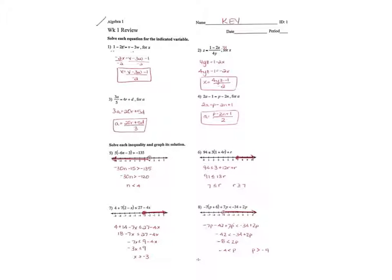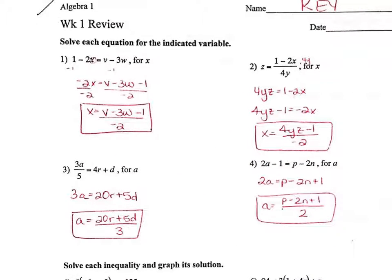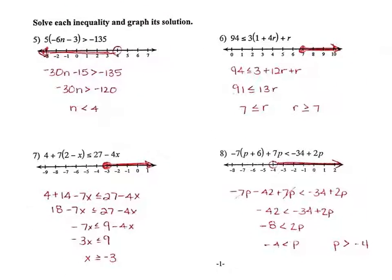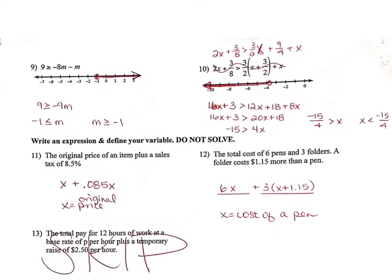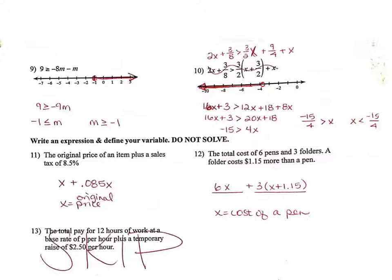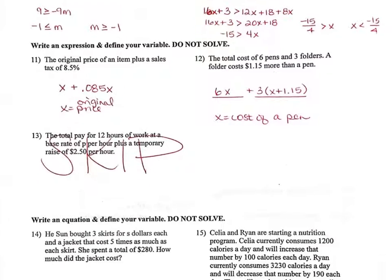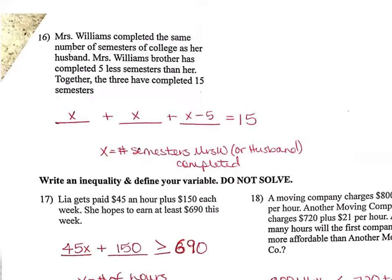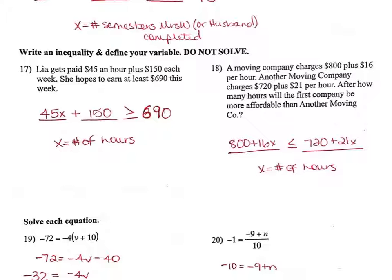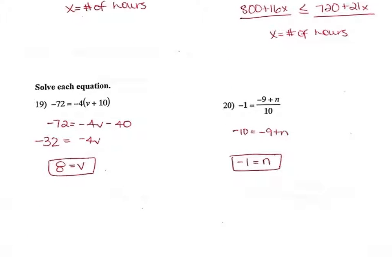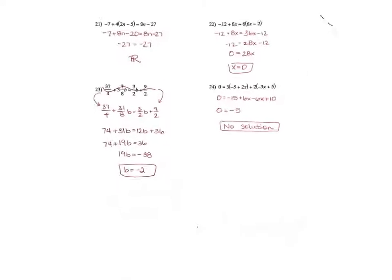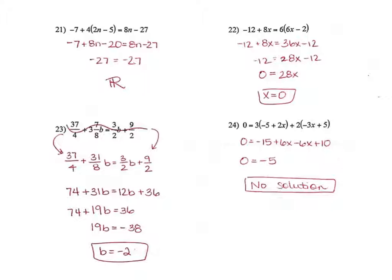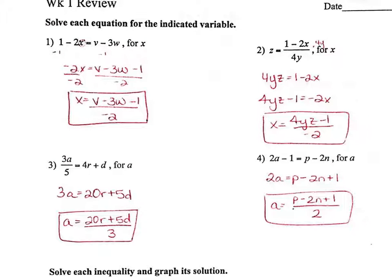Okay, so just like last week, I'm going to start by giving you a chance to check over some answers, and then I'm going to work out and explain problems. All right, so here's 1 through 4, 5 through 8, 9 and 10, 11 and 12, 14 and 15, 16, 17 and 18, 19 and 20, 21 through 24. All right, so let's go back through and talk about some of these.